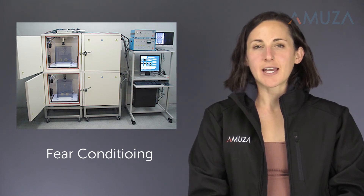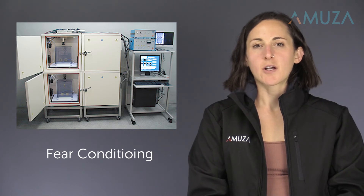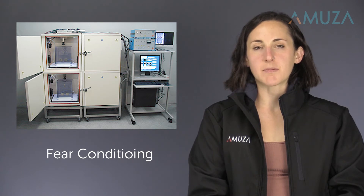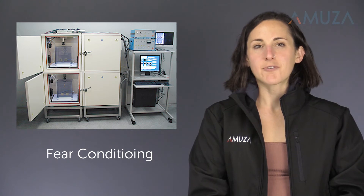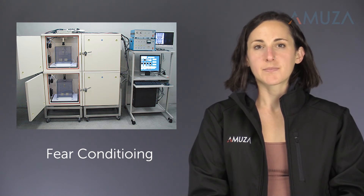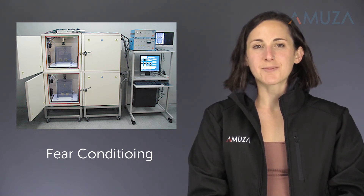The next test is fear conditioning. Fear conditioning is a type of associative learning task in which experimental test subjects learn that a previously neutral stimulus is associated with an aversive stimulus like a foot shock. This learning is evidenced by anticipated freezing in response to the previously neutral cue even in the absence of the foot shock. Animals learn to both fear the stimulus and the context that the stimulus is presented in.